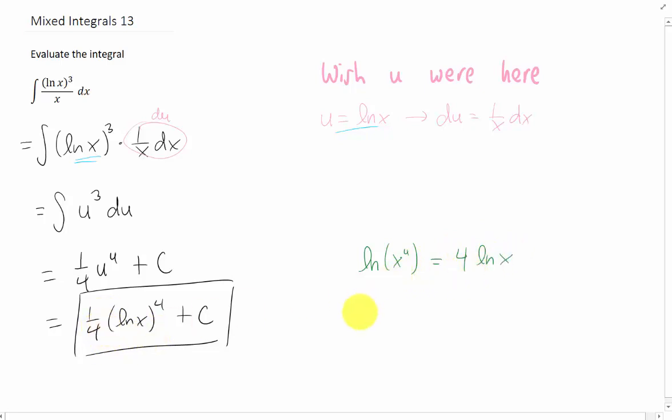because then those fours would cancel. However, that fourth power in this result is on the entire function of the natural log of x, not just the x,